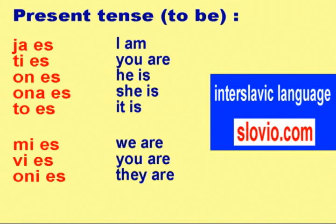Present tense — To be: YA ES, TI ES, ON ES, ONA ES, TO ES, MI ES, VI ES, ONI ES.